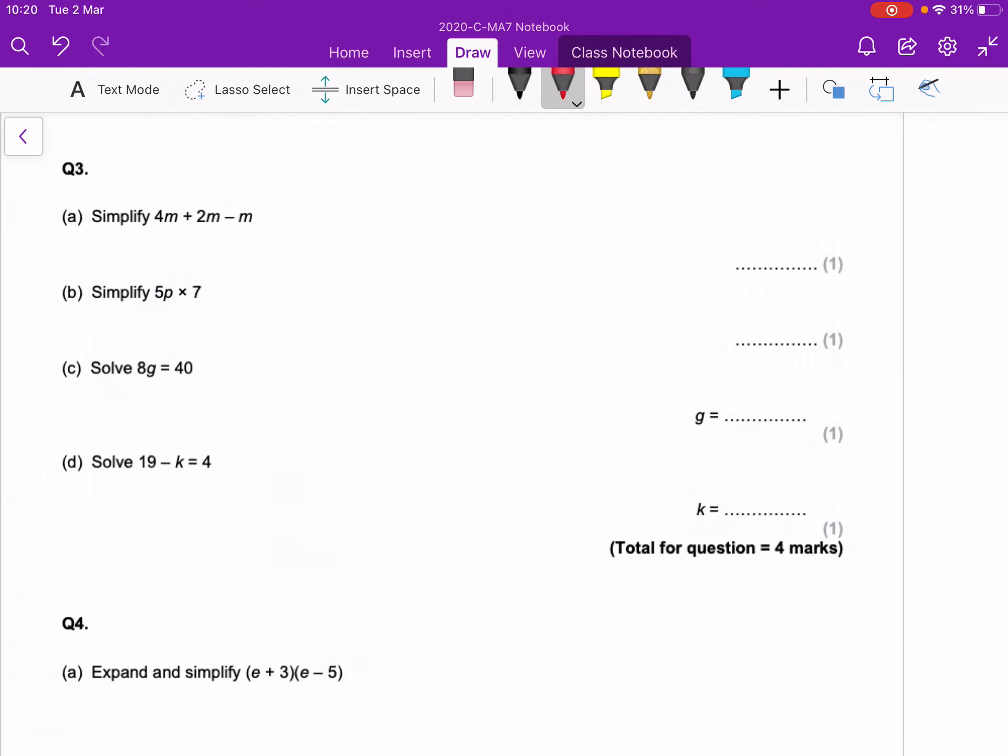OK, question number 3. 4m plus 2m, so it's like 4 mangoes add on 2 more mangoes makes 6 mangoes, minus 1 mango, or minus m, so 6m minus 1m is 5m.